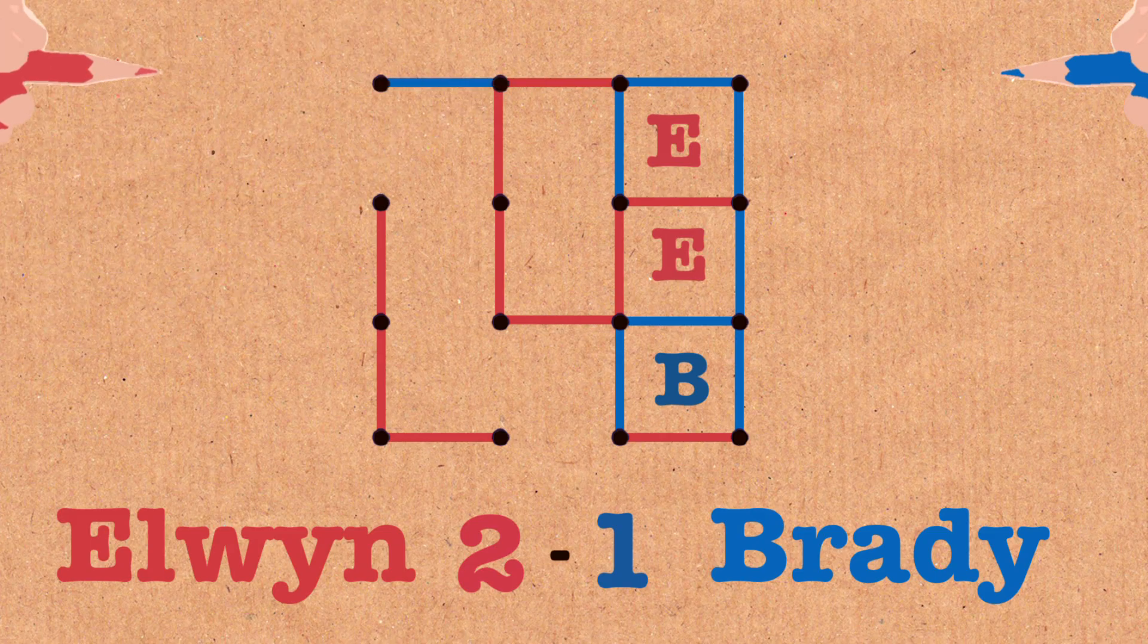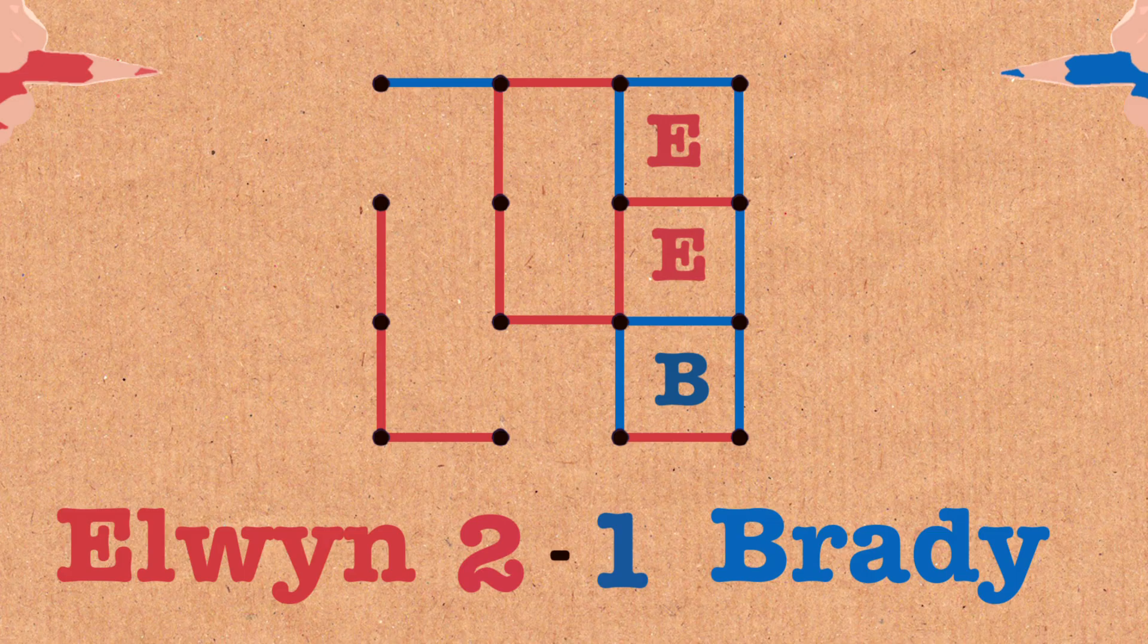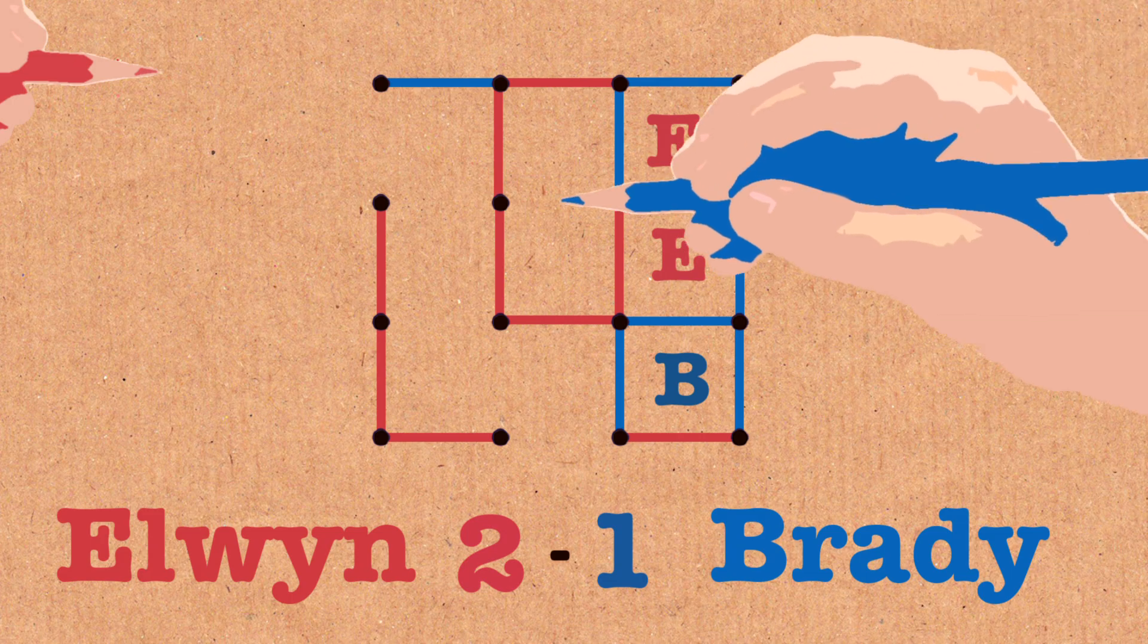Now I've completed my turn without making boxes. I'm done. It's his turn now. And whatever he does if he goes there it's called a double cross. That's probably his best move and he makes two boxes on one turn.